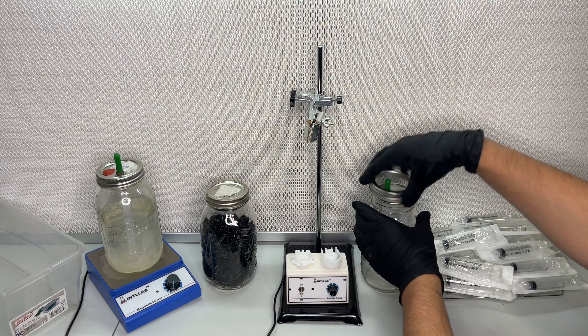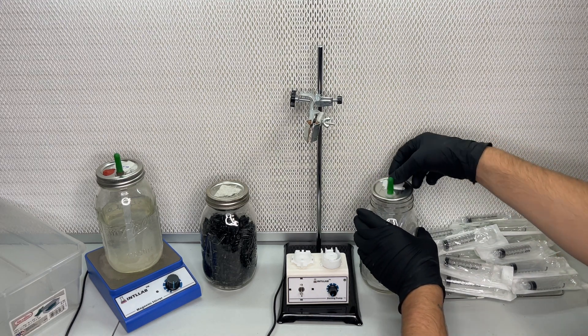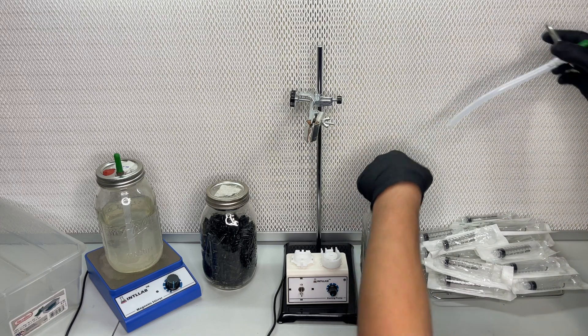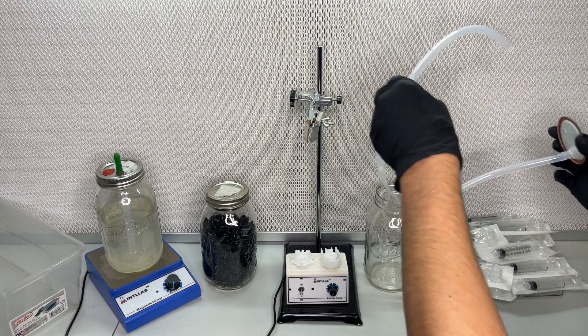A peristaltic pump uses a small motor to spin these wheels which pinch the tubing, moving the liquid along the tube without actually touching it.